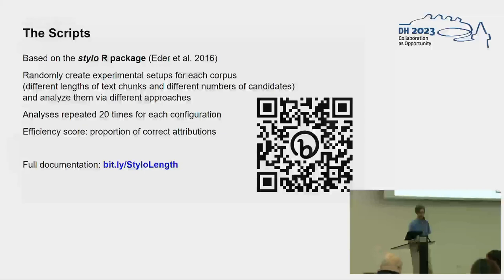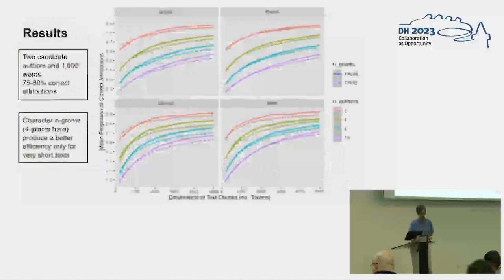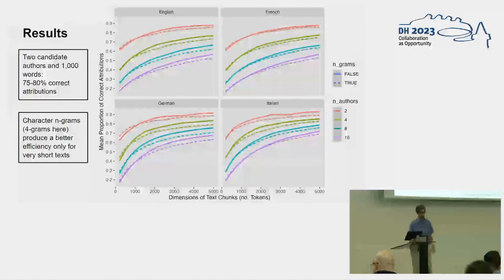The analyses were repeated twenty times to have some variance and to counter the randomness in the selection. The efficiency scores shown are simply the proportion of correct attributions — a very simple and direct efficiency score.